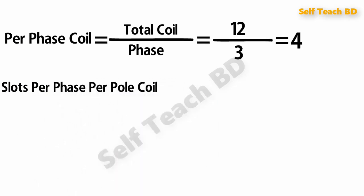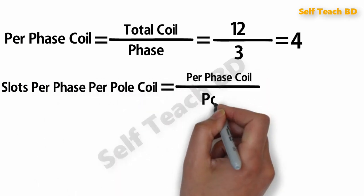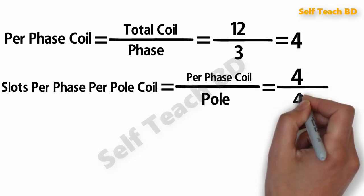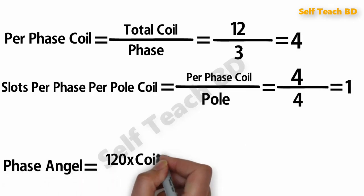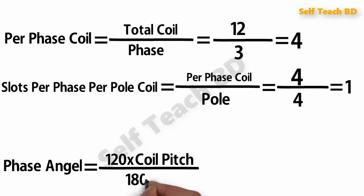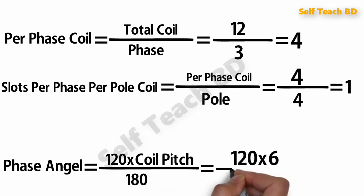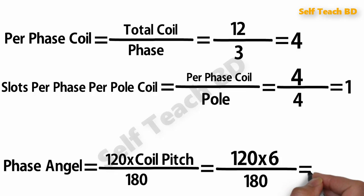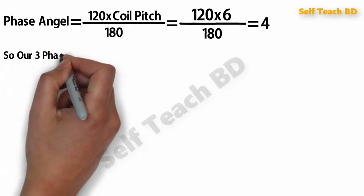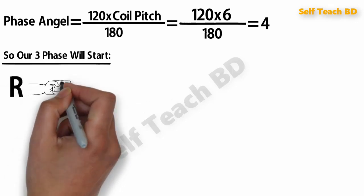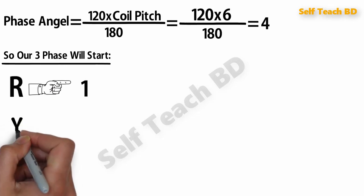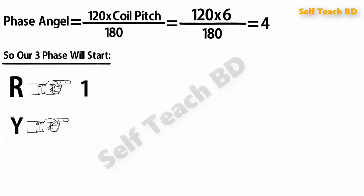Slot per phase: coil per phase is 4, pole is 4, so we find one phase angle 120 into coil piece is 4, so our three phase will start. R will start 1, yellow will start 1 plus 4 equals 5, and blue will start 5 plus 4 equals 9.